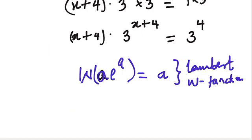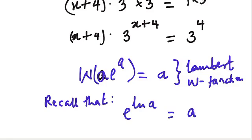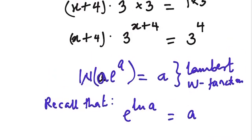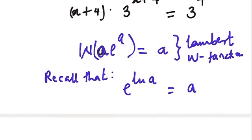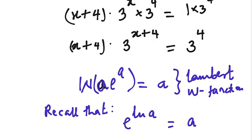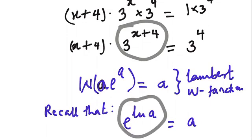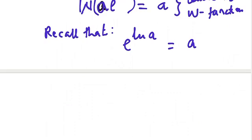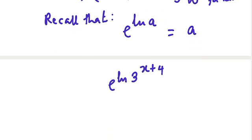I want you to recall that when you have e to the power of ln of a, you know that this will give us a, because these two are inverse to each other — they cancel out. So we are going to pick this and write 3 to the power of x plus 4 as e to the power of ln of 3 to the power of x plus 4, which will actually give us 3 to the power of x plus 4.